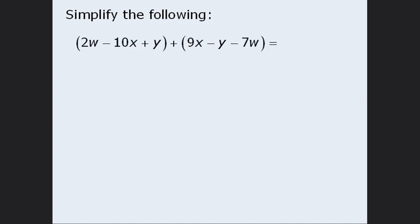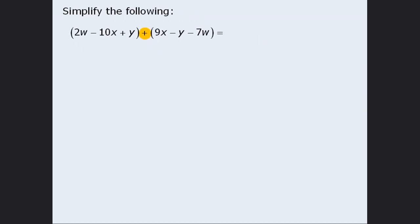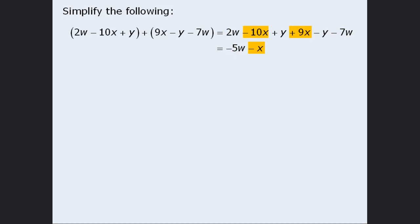Now let's simplify a different kind of expression. Here we are taking one expression in parentheses and adding another expression in parentheses. When adding two expressions in parentheses we simply remove the parentheses and then further simplify the like terms. We can combine 2w and negative 7w to get negative 5w. Next, negative 10x plus 9x simplifies to be negative x. And positive 1y and negative 1y cancel out, leaving us with no y's. So the expression simplifies to be negative 5w minus x.